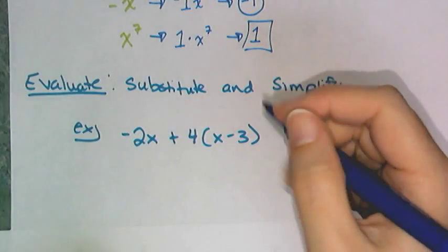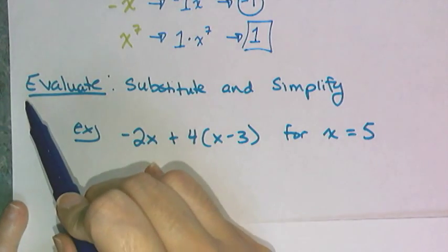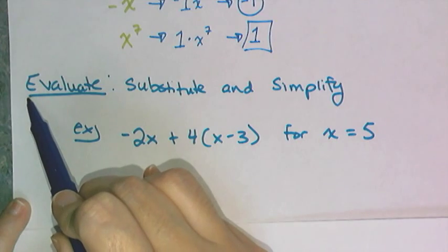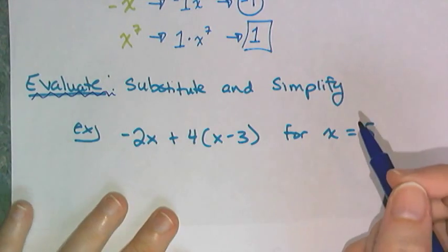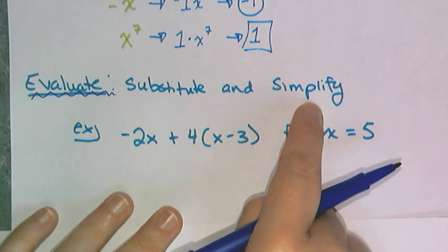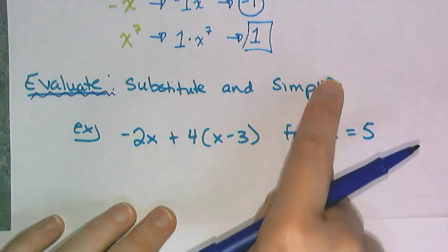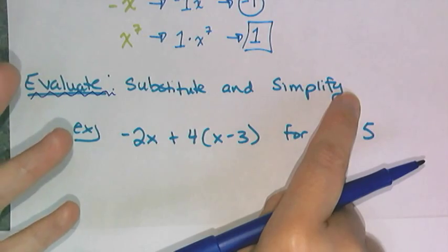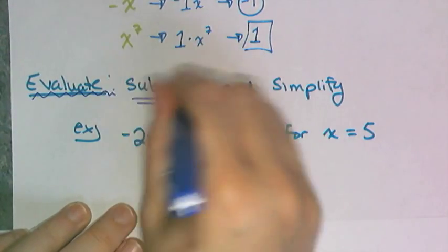Now to the meat and potatoes of expressions and the work that you're going to have to do in class. And that is to evaluate an algebraic expression. Evaluate just means to substitute in some values and then simplify it. Now you get to use a calculator in class, so the simplification part is really easy. It's just an order of operations problem.